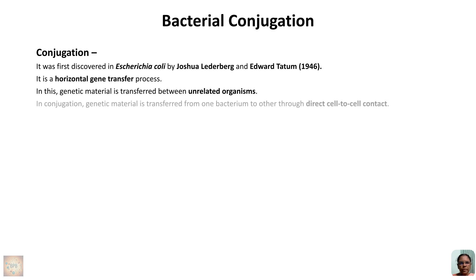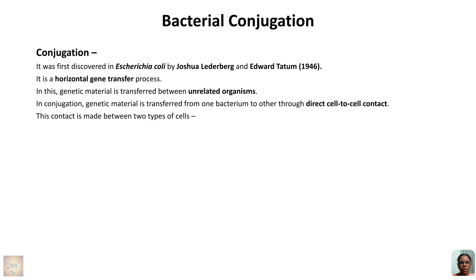There is another type called vertical gene transfer: the transfer of genetic material from parent to offspring. It is direct gene transfer — the traditional inheritance passing from parent to offspring through reproduction. In bacteria, horizontal gene transfer only occurs; it is a transfer between two organisms that are not directly related.